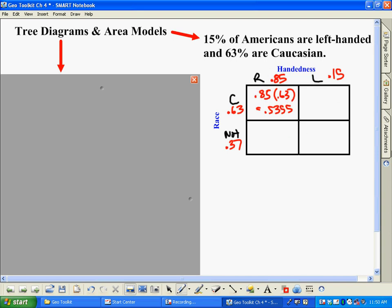If we move over here to this table, to this spot, we would take left-handers as 0.15, multiply by the percentage of Caucasians, and when you do that, you would get 0.0945. So that tells you once again that of all Americans, about 9% are Caucasian and left-handed.